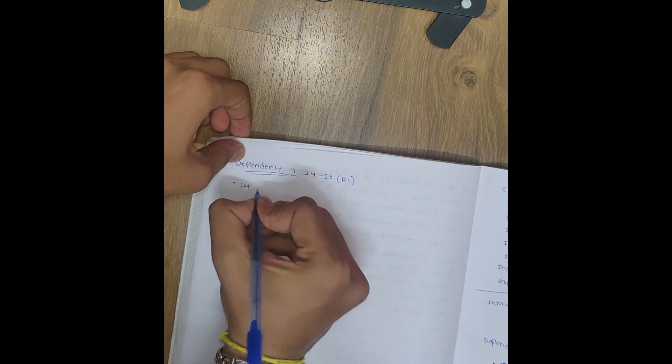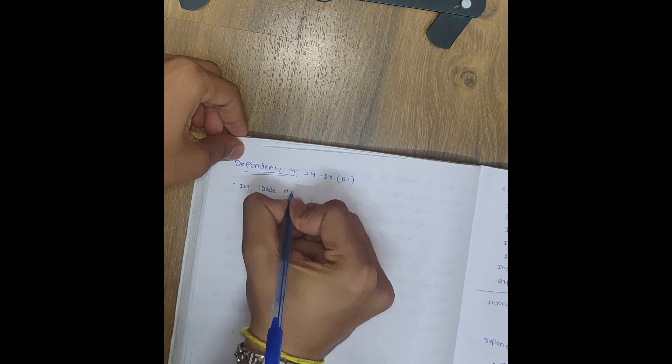I4 loads data into R1. Next, I5 - what happens here? I5 compares R1 and R6, right? I5 compares.